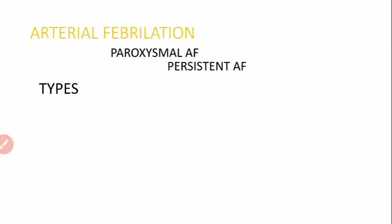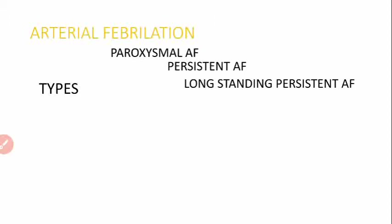The third type is long-standing persistent atrial fibrillation, which takes more than one year and requires electric cardioversion and immediate medical attention. The fourth type is permanent atrial fibrillation, also called chronic or ongoing atrial fibrillation, in which there is difficulty restoring normal sinus rhythm.